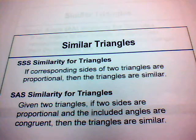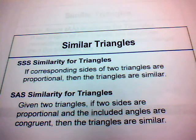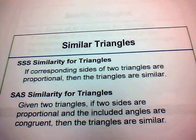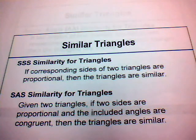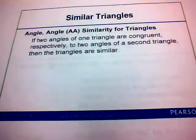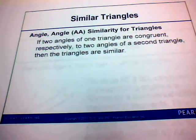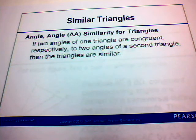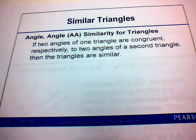Similar triangles have pretty much the same shape but not the same size. For SAS similarity: if two sides of two triangles are proportional and the included angles are congruent, then the triangles are similar. For AA similarity: if two angles of one triangle are congruent respectively to two angles of a second triangle, then the triangles are similar.